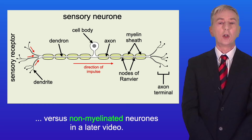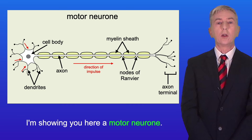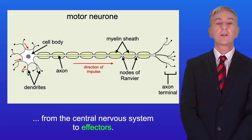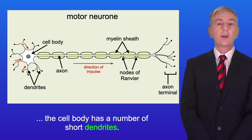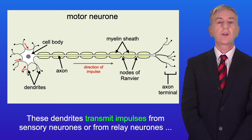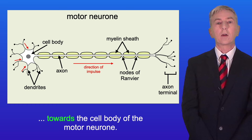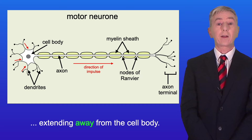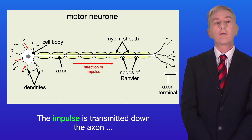Here is a motor neuron. Remember that motor neurons transmit impulses from the central nervous system to effectors. In the case of the motor neuron, the cell body has a number of short dendrites. These dendrites transmit impulses from sensory neurons or from relay neurons towards the cell body of the motor neuron. The motor neuron has one long axon extending away from the cell body, and the impulse is transmitted down the axon from the cell body to the effector.